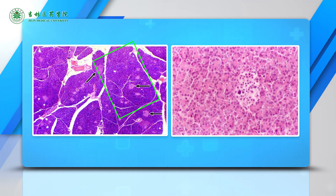In the right micrograph, the square shows one islet of Langerhans, which is the endocrine portion.